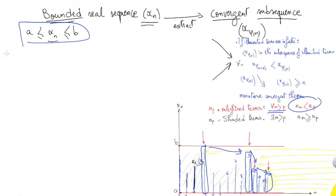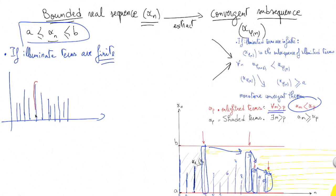The other case will happen when illuminated terms are finite. What will happen then is that we would have some illuminated terms, for example this one, this one, this one, and suppose this is the last illuminated term as they are finite. As we suppose that illuminated terms are finite, every term coming after the last one should be shaded. If these are terms coming after the last one, they all should be shaded by a term hiding them.